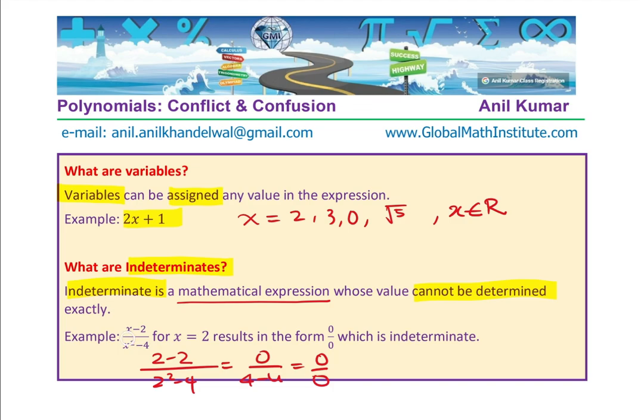So this expression is indeterminate for x equals to 2. But the variable x could have the value 2, no problems. Problem is, when you substitute 2 into this expression, you get 0 over 0 which is again an expression whose value you cannot find and therefore it is called indeterminate.